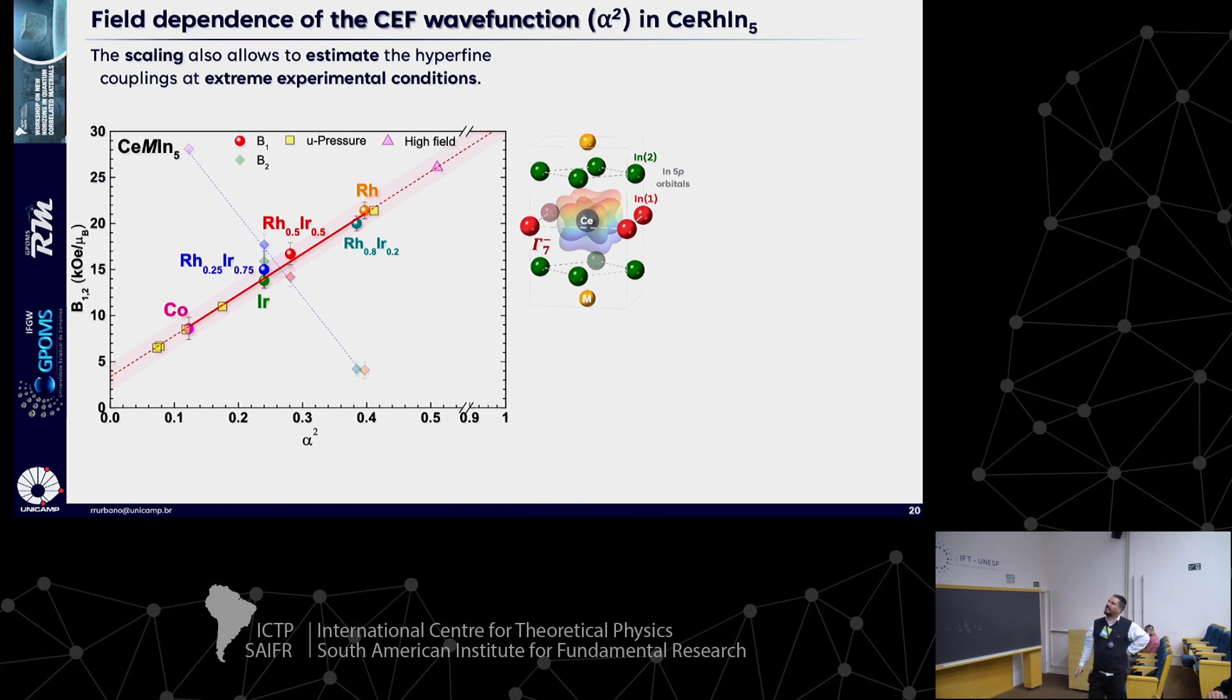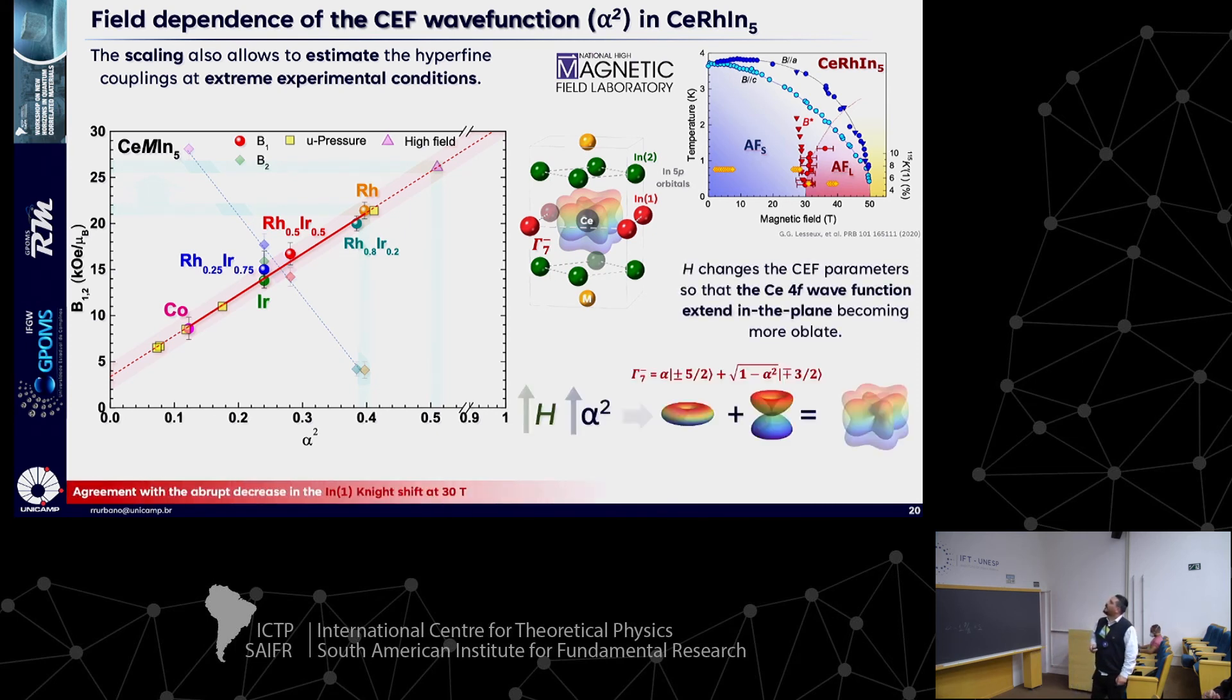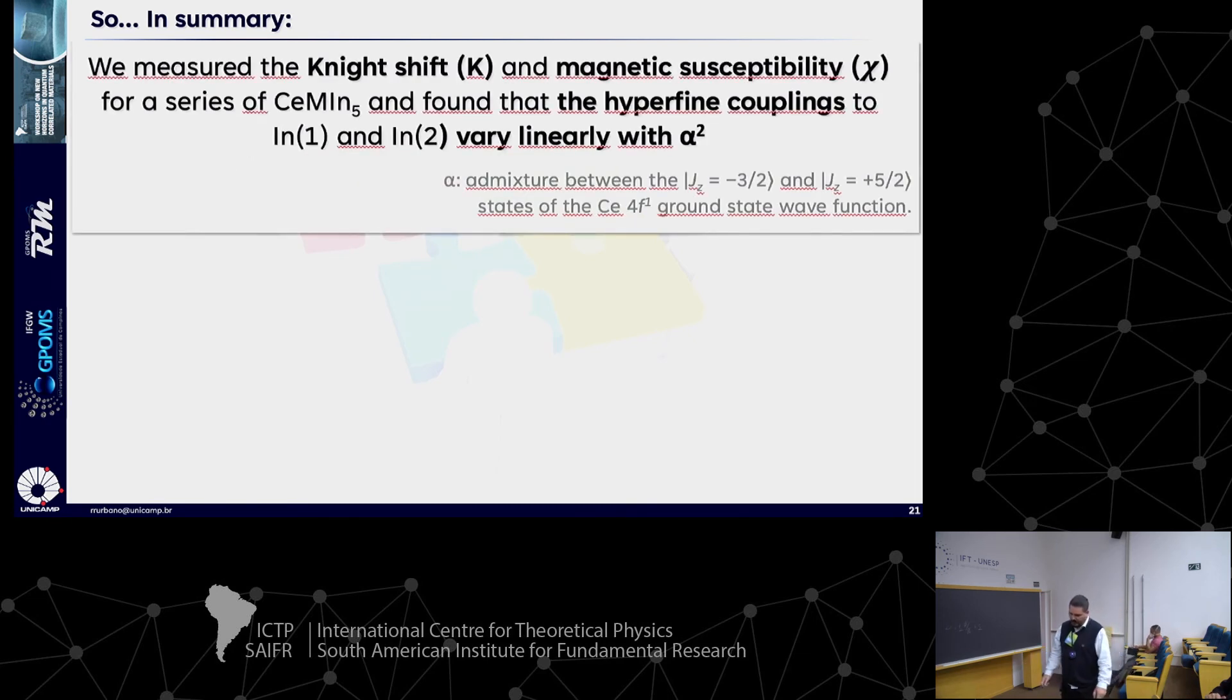Then we can infer some pressure dependence for the alpha parameter as well. The results here imply that pressure changed the crystal field parameter. Actually, it creates an orbital that favors hybridization out of plane. This is very important because we know for these materials that we need that hybridization to get to superconductivity. We don't want hybridization in-plane for superconductivity. We need out of plane. This is a very important result. Let's look at the high field data I showed you in the beginning. Remember this phase diagram. If we look at this Knight shift data, we can also get the alpha value according to this linear behavior. If we believe in this, we now can provide another piece of information that the hybridization actually is improved in-plane between cerium and indium-1 sites.